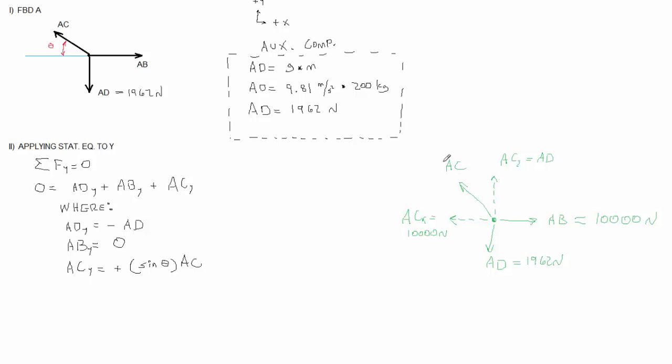So this force right here would actually exceed 10,000 newtons. Therefore, the problem would not be accurate. So that's why we're applying the 10,000 newtons to AC and not to AB.